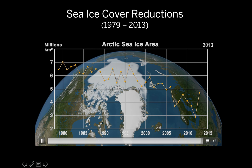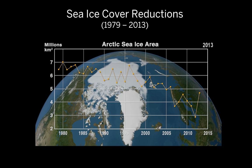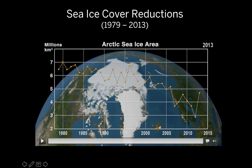As I said, this has huge biological implications, but also physically, as this white surface melts, we are left with dark ocean waters which absorb much more radiation. So less solar radiation is being reflected and more is being absorbed.